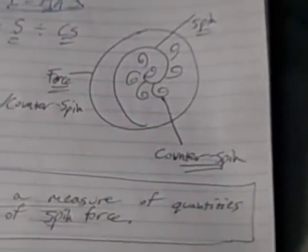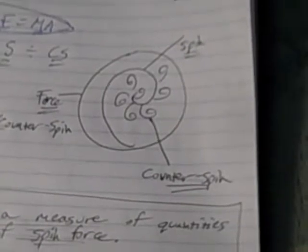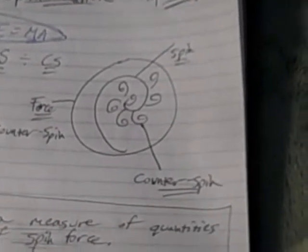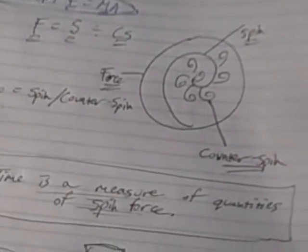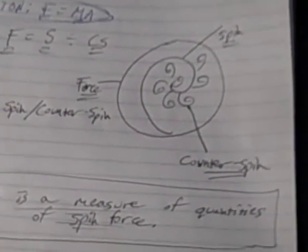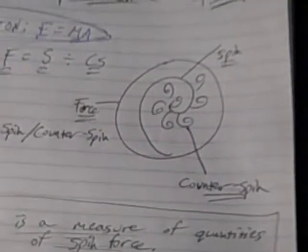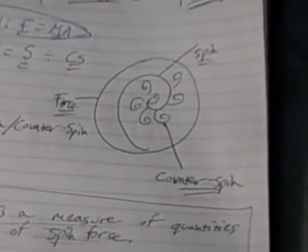Every spin force has a limit, range, or extent, and every spin force is being resisted at all times by counter spin forces. This is why things in nature can be potentially difficult or challenging if you don't have sufficient spin forces to resist the counter spin forces.